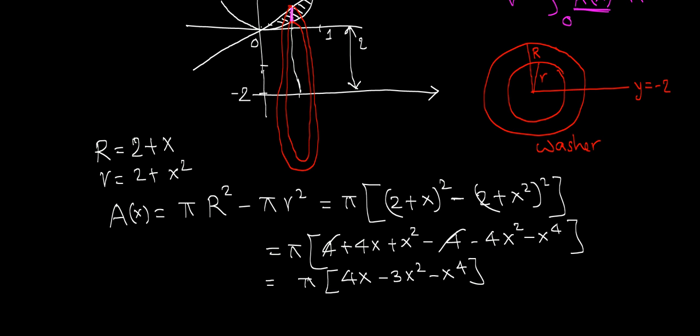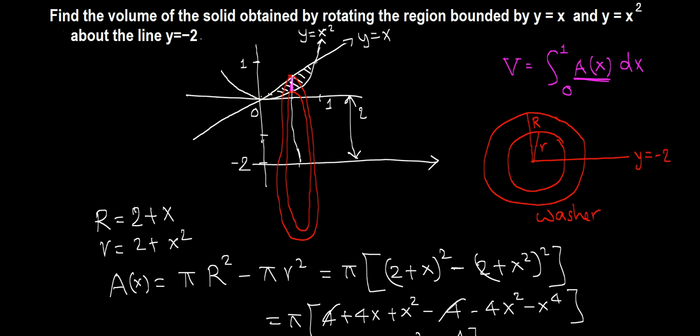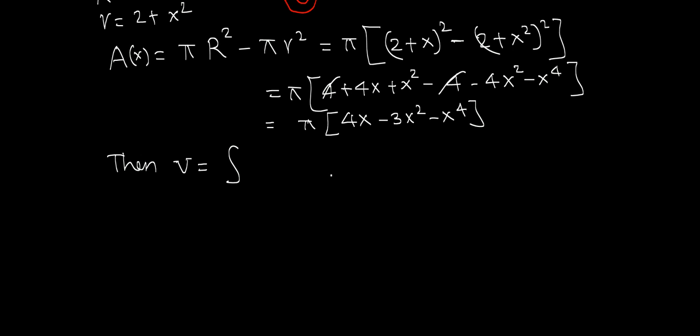This is the area of our sample cross-section washer. Then the volume that we are interested in is given by the definite integral of this. The sample cross-section could go from 0 to 1. This is the formula: integral from 0 to 1 of pi times 4x minus 3x squared minus x to the fourth dx.